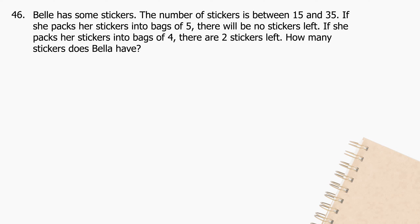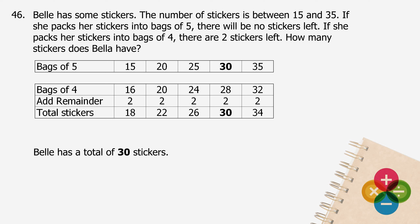Question 46: Belle has some stickers. The number of stickers is between 15 and 35. If she packs her stickers into bags of 5, there will be no stickers left. If she packs her stickers into bags of 4, there are 2 stickers left. How many stickers does Belle have? Possible amounts for bags of 5: 15, 20, 25, 30, 35. Possible amounts for bags of 4 with remainder 2: 18, 22, 26, 30, 34. The common amount is 30. Belle has a total of 30 stickers.